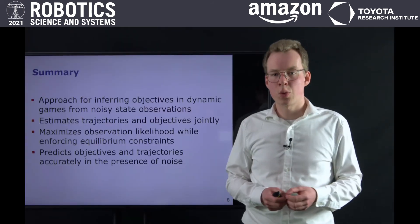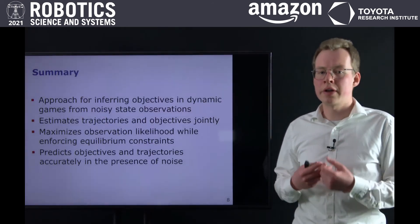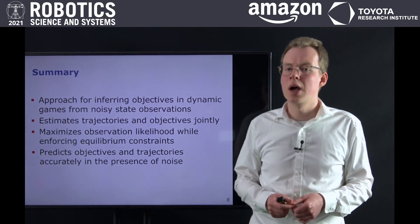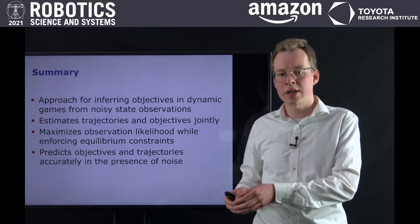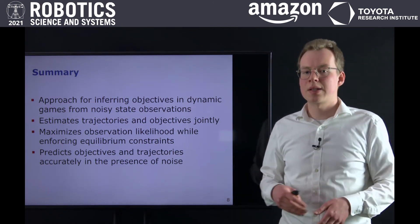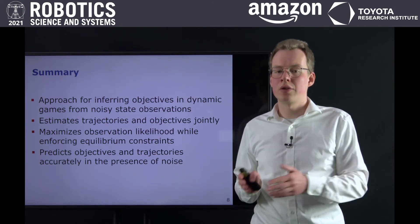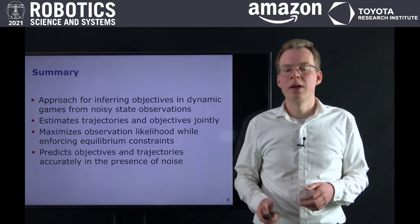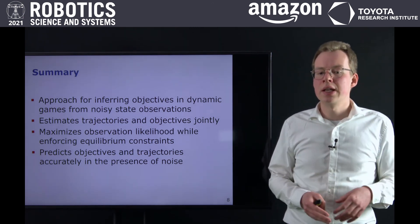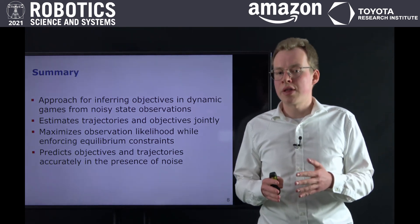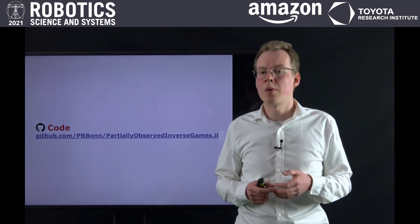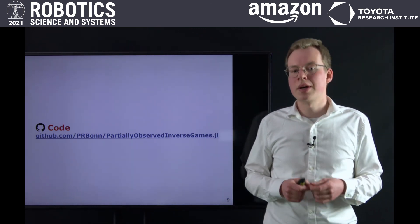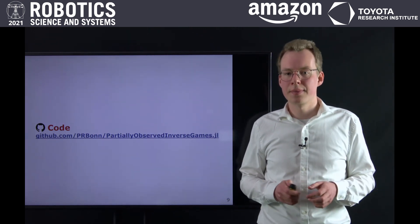To summarize this work, we have presented an approach for inferring objectives in continuous dynamic games from noise corrupted partial state observations. Our method estimates objectives and trajectories of players jointly by maximizing observation likelihood while enforcing equilibrium constraints. The experimental results show that even in the presence of noise, our method can predict player objectives and trajectories with high accuracy. The code for our work has already been released on GitHub. Please feel free to give it a try. Thank you.